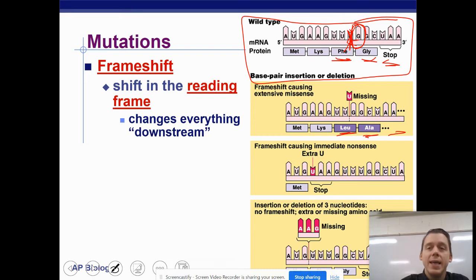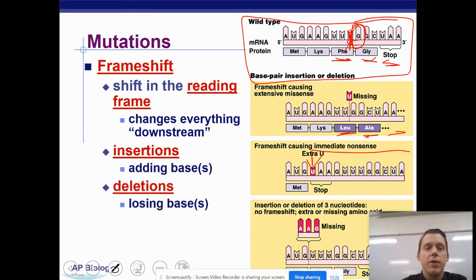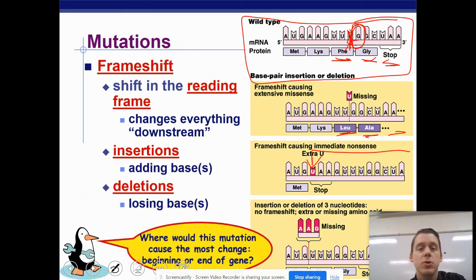We could also add in an extra base like we did here. So AAG, and we've added in an extra U, and that shifts everything to the right by one. So that has made an early stop codon. That also is going to change everything after this point. So frameshift mutations are insertions and they are deletions. Insertions are when we add in bases. Deletions are when we lose bases.